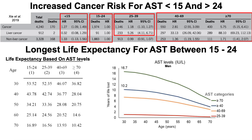Also interesting in this study is that they looked at life expectancy. The longest life expectancy was for people who had AST levels between 15 to 24 IUs per liter. For example, for people in the 30-year-old age group with AST of 15 to 24, they had an average expected life expectancy of 53.5 additional years — so expected to live to about 83.5. AST values higher than 15 to 24 had lower life expectancy: about one year shorter for the 25 to 39 group, a seven-and-a-half-year shorter life expectancy for the 40 to 69 group, and up to a 17-year decrease for AST greater than 70.